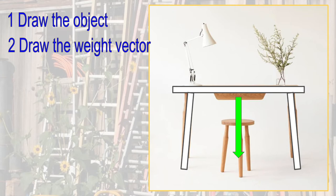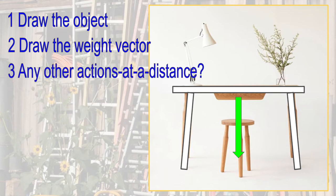Number two, draw the force vector for the object's weight. It acts from the table's centre of gravity. It is the force of the Earth on the table. You must also decide on the scale for all of the arrows. For example, one centimetre could represent 50 Newtons. Three, consider if there are any other action at a distance forces, such as magnetism or electrostatics acting on the table, and draw them. Here there are none.